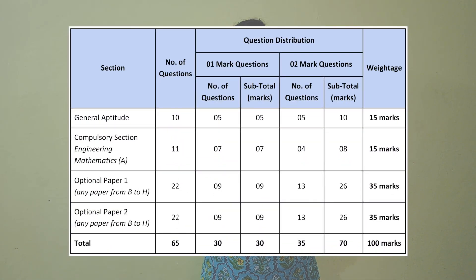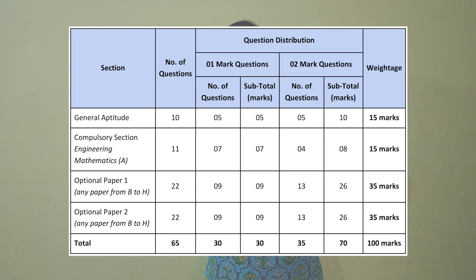For XE, the General Aptitude paper carries 15 marks with 10 questions — five questions for one mark each and five questions for two marks each. The compulsory paper, Engineering Mathematics, carries a weightage of 15 marks with 11 questions in total, where seven questions are for one mark each and the remaining four questions are for two marks each. Both optional papers carry a weightage of 35 marks each, with 22 questions — nine questions for one mark each and 13 questions for two marks each.